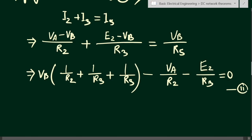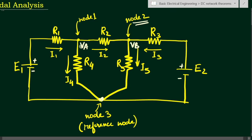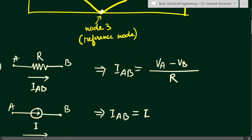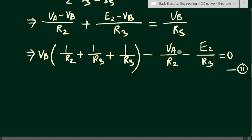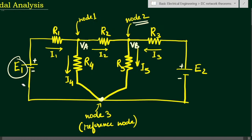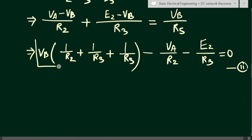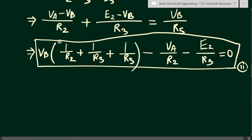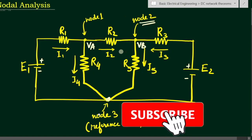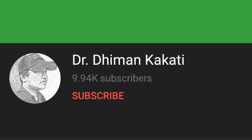Now we have two equations for the entire circuit. Using loop analysis with KVL would have given three equations, but nodal analysis gives us just two. The unknown variables are Va and Vb — the resistance values and EMF values are given. Solving equations one and two gives Va and Vb, from which all branch currents can be found. This concludes the nodal analysis lecture.